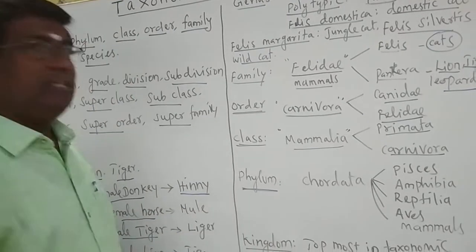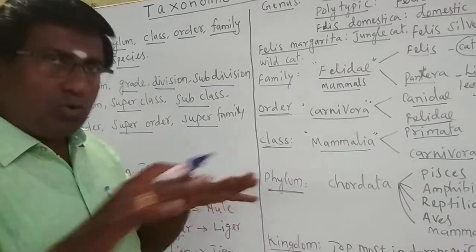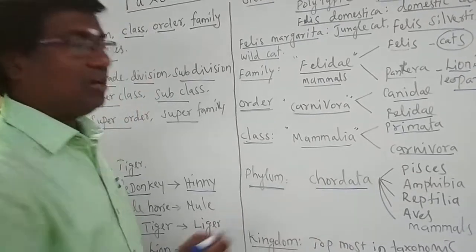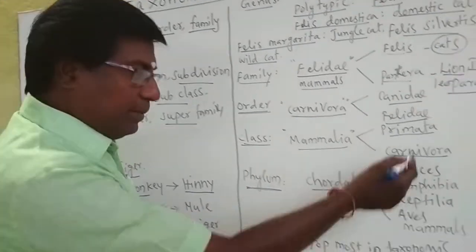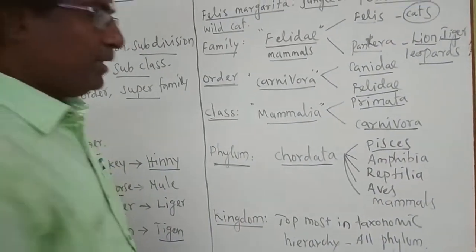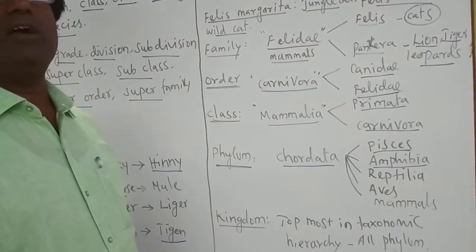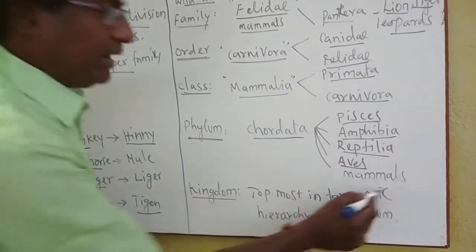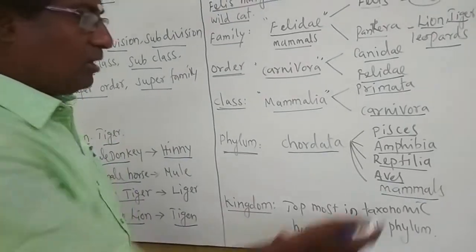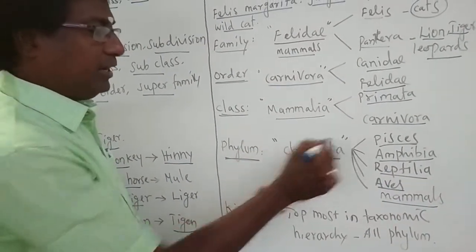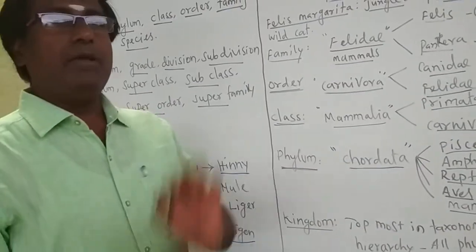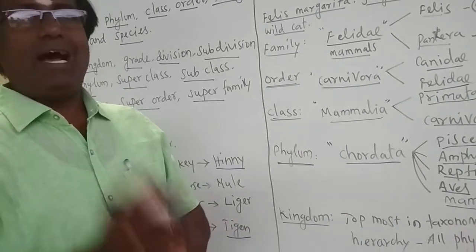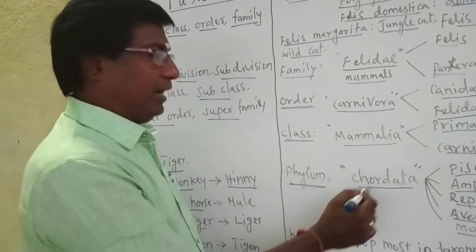The next is the phylum. Many closely related classes are put into one phylum. For example, the phylum Chordata contains many classes: fishes, Amphibia (e.g., frogs living in both water and land), Reptilia (land-dwelling animals), Aves (birds), and Mammalia (cow, dog, etc.). These classes are placed in Chordata because they all share a common character — they have a vertebral column or notochord and a tubular nerve cord.